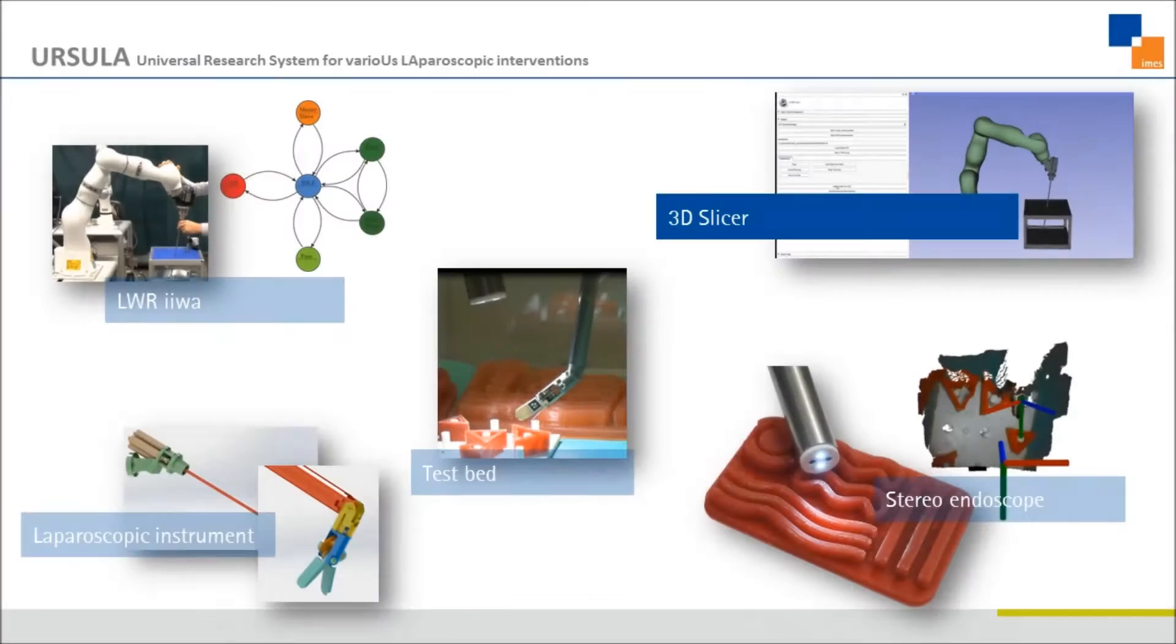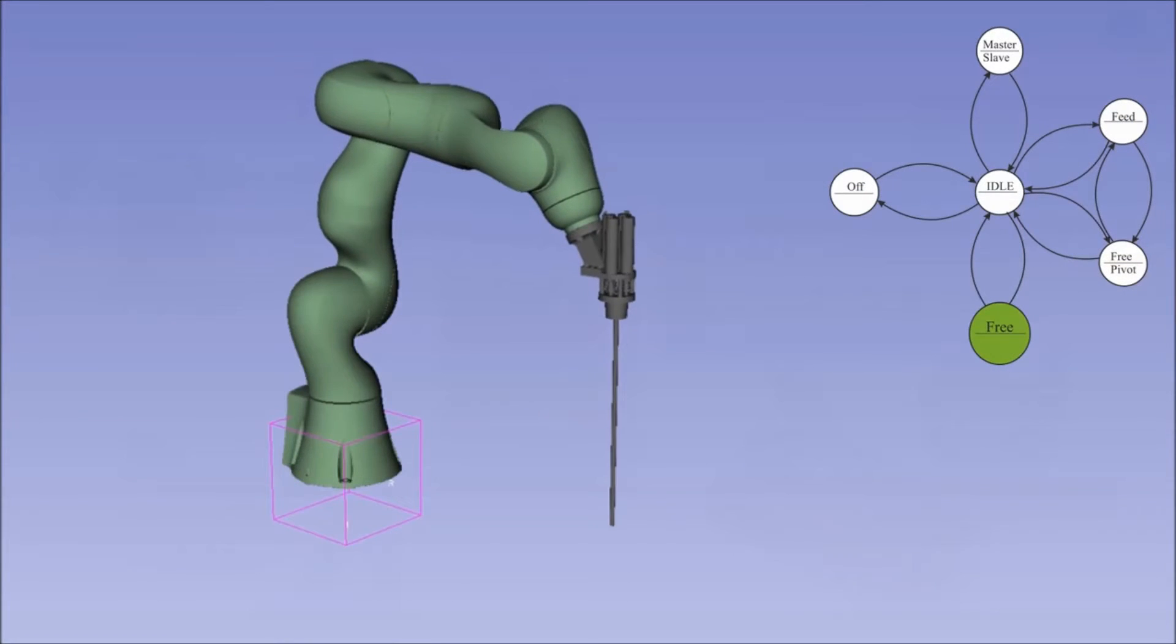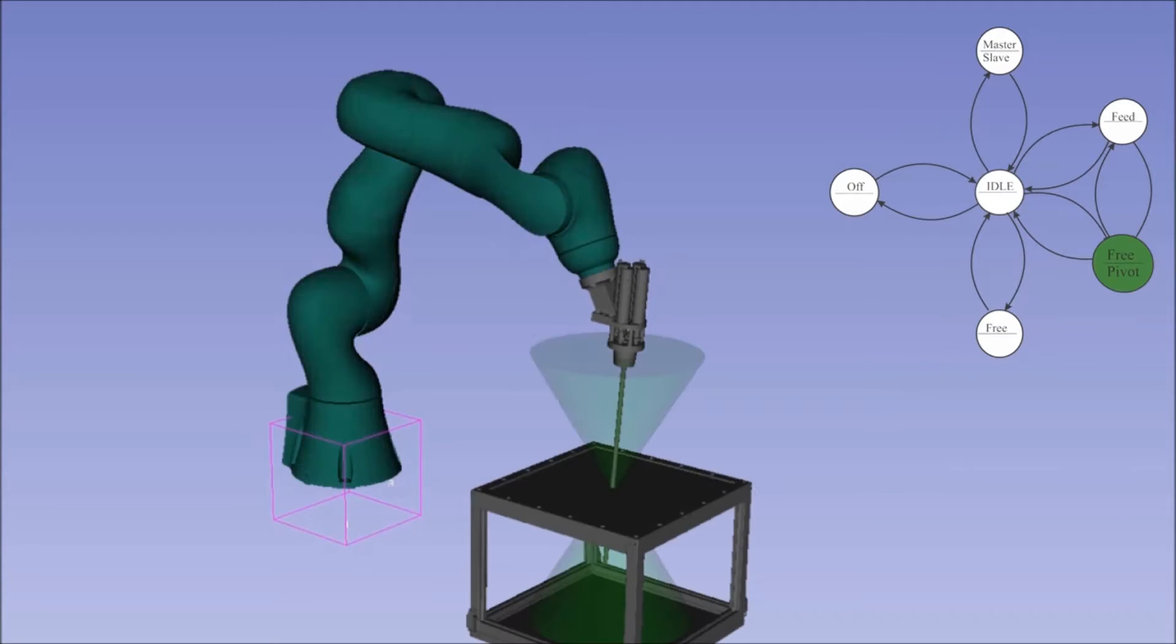All system components are integrated in 3D Slicer. Here we see the visualization of the robot in 3D Slicer. We are using the current position of the robot to automatically set the entrance point of the instrument.